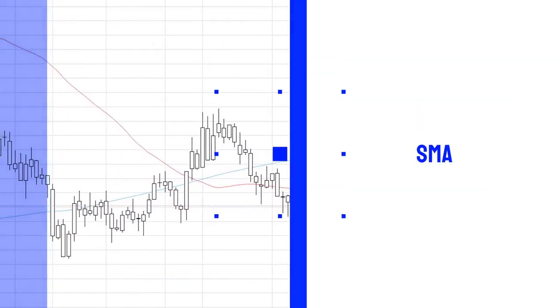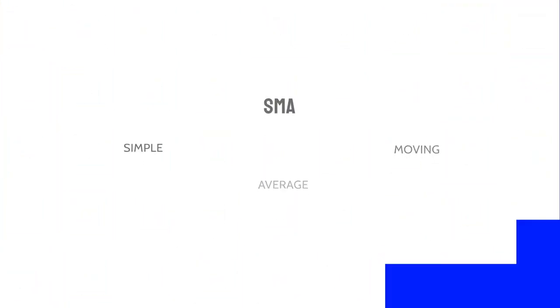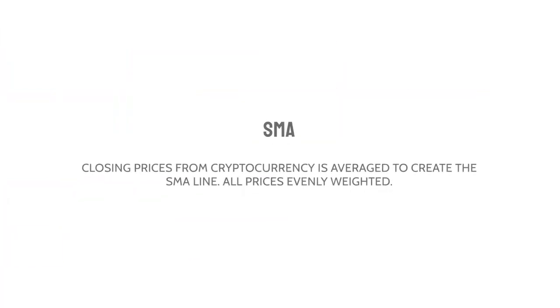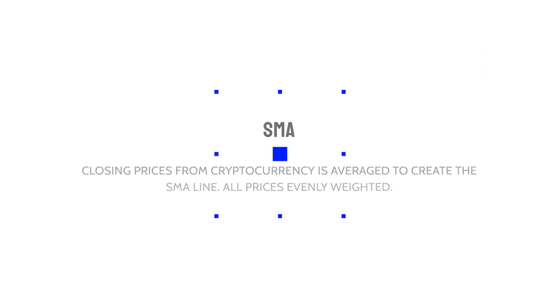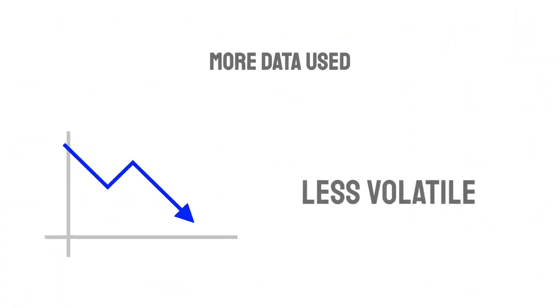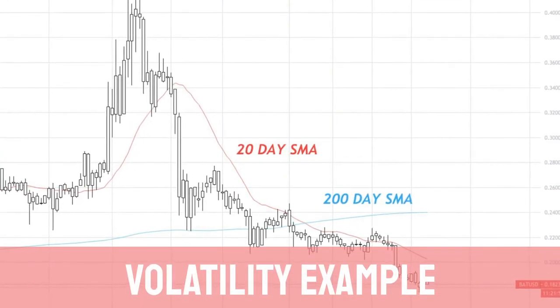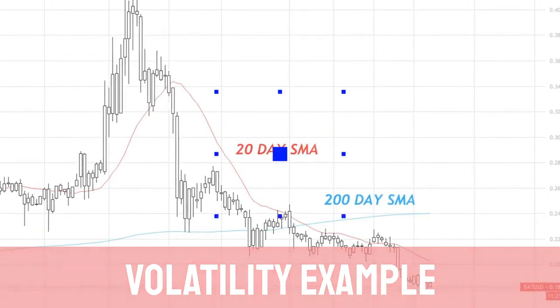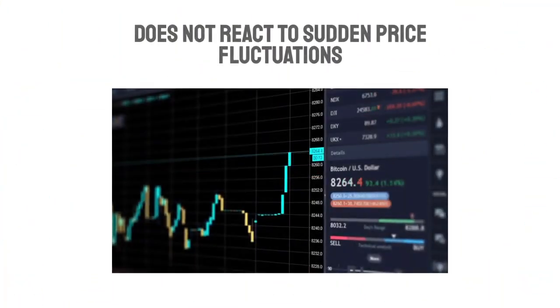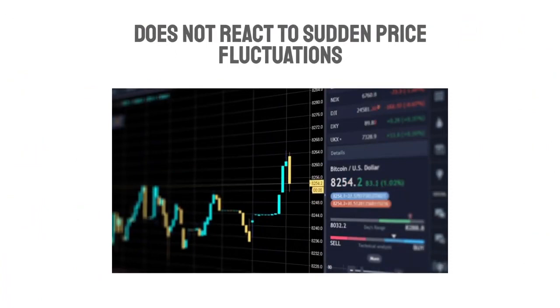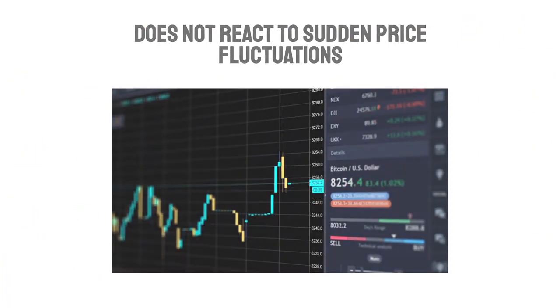SMAs are a type of moving average and stand for Simple Moving Average. With the SMA, when finding the average for the line, all of the closing prices are weighted equally. The higher number of days used for a simple moving average, the less volatile the indicator is. For example, here we can see the difference between a 20-day and a 200-day simple moving average. Due to each of the closing prices being weighted equally, the simple moving average does not react to sudden price fluctuations in a cryptocurrency.